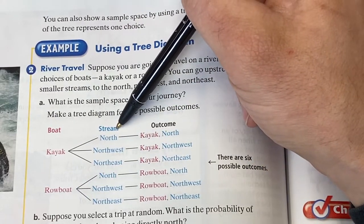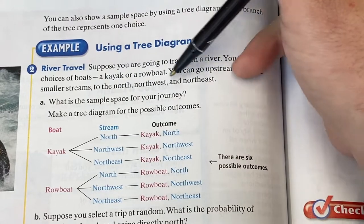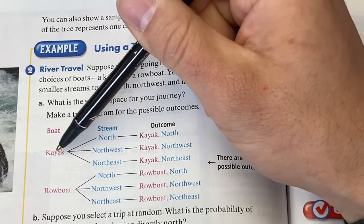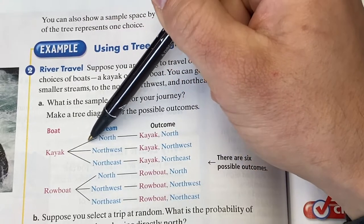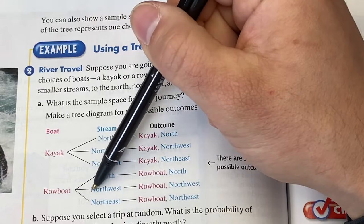The next thing we have to choose is our stream. And there are three options. North, northwest, or northeast. So each of these gets three branches. The kayak gets three branches. North, northwest, northeast. The rowboat gets three branches. North, northwest, northeast.